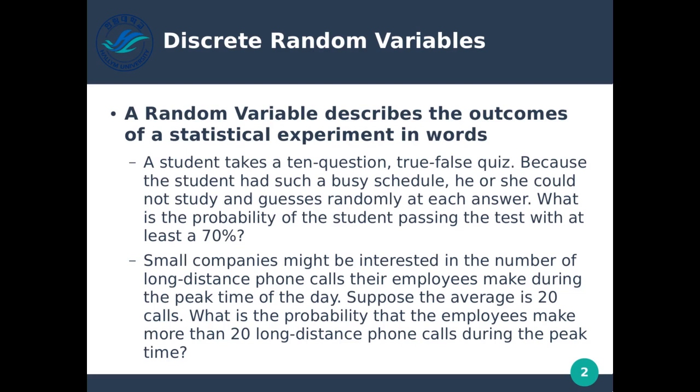A random variable describes the outcomes of a statistical experiment in words. For example, a student takes a 10-question true-false quiz. Because the student has such a busy schedule, he or she could not study and guesses randomly at each answer. What is the probability of the student passing the test with at least a 70%? We're describing discrete random variables because we are asking the question using words rather than a specific number.